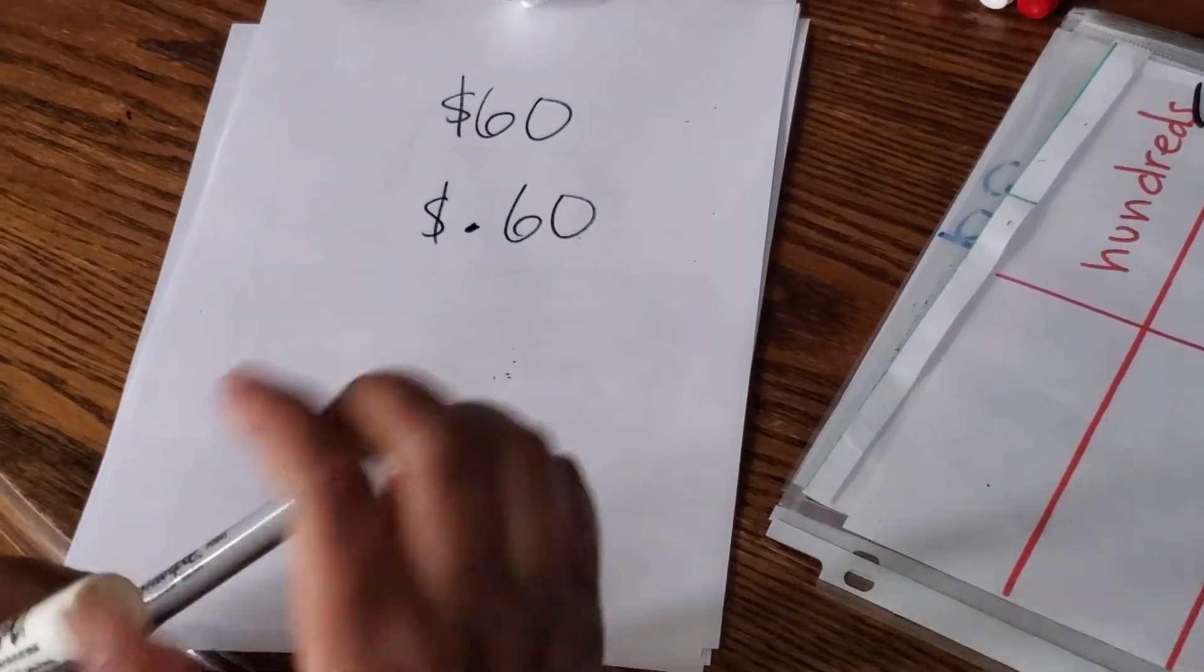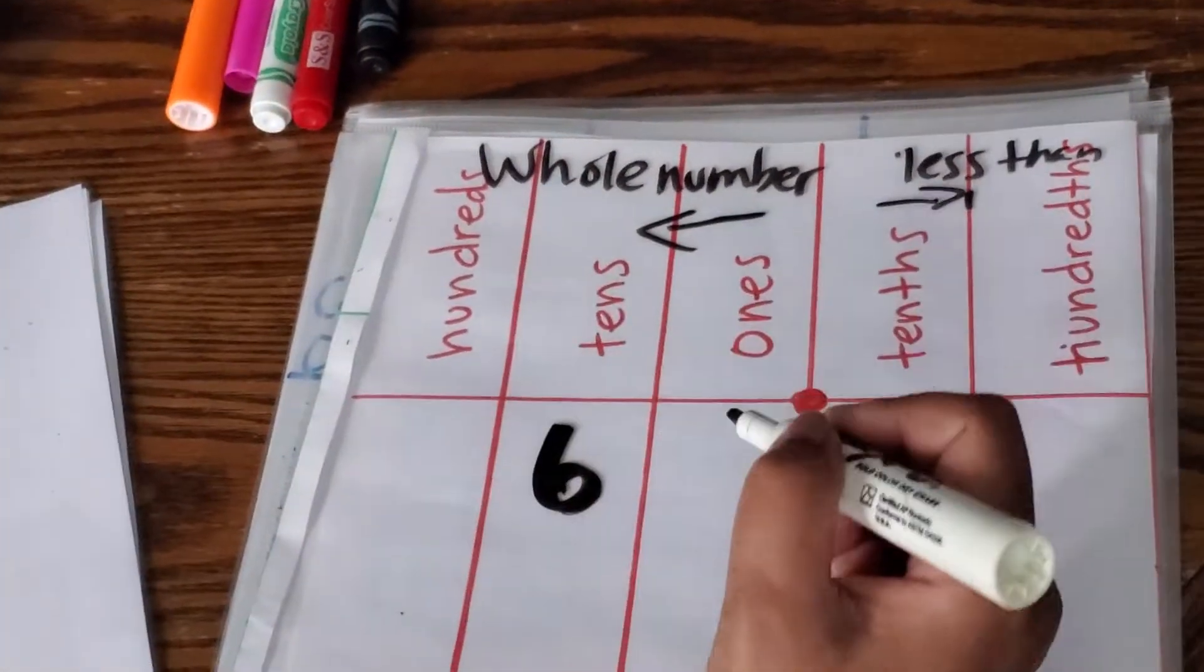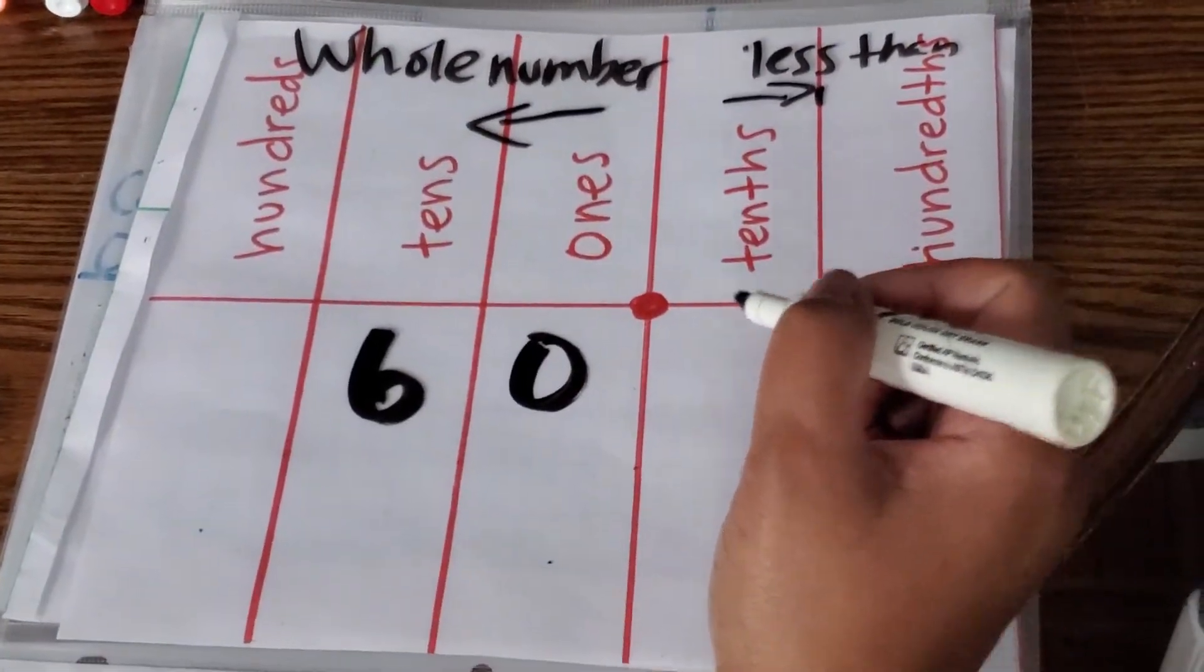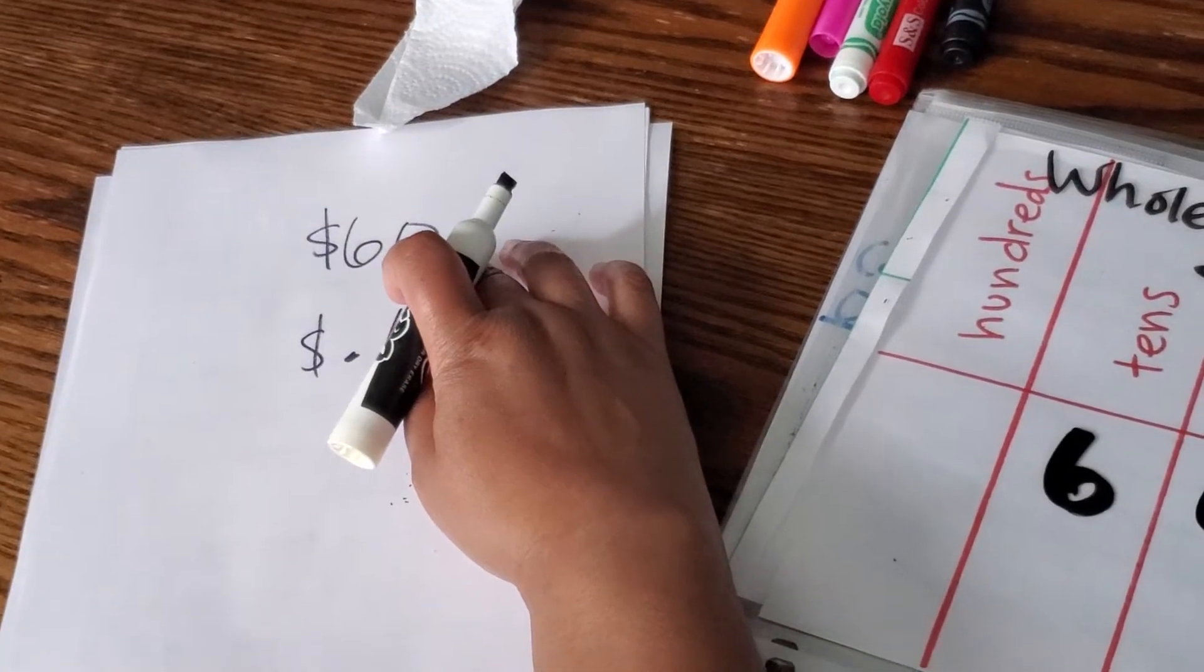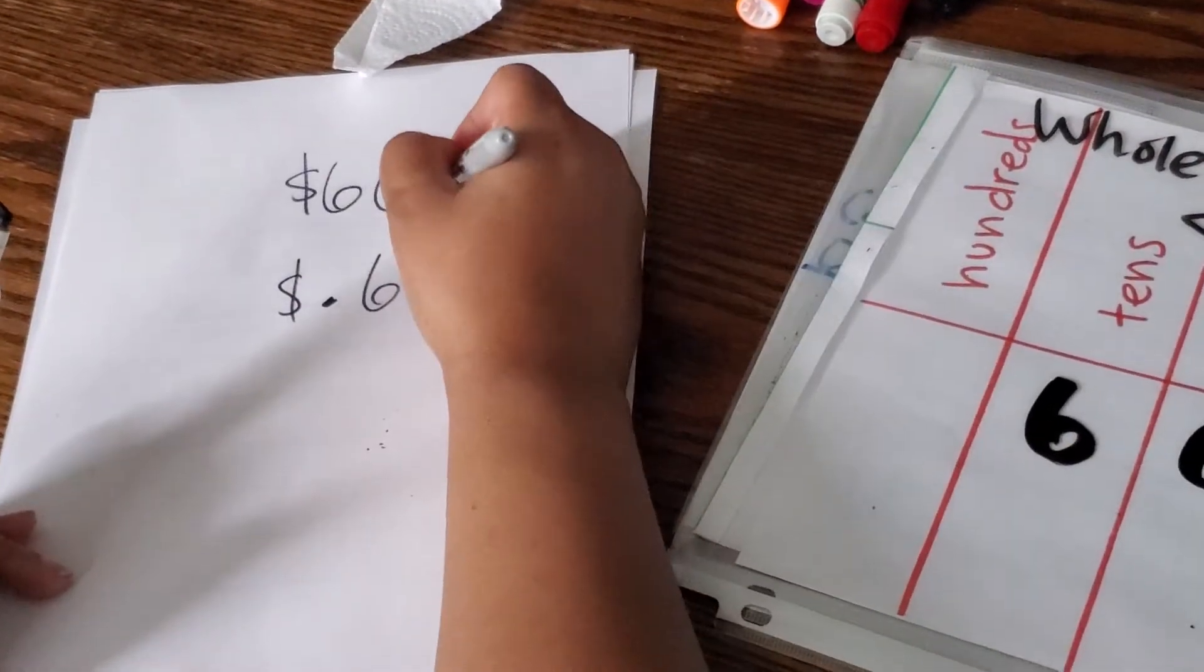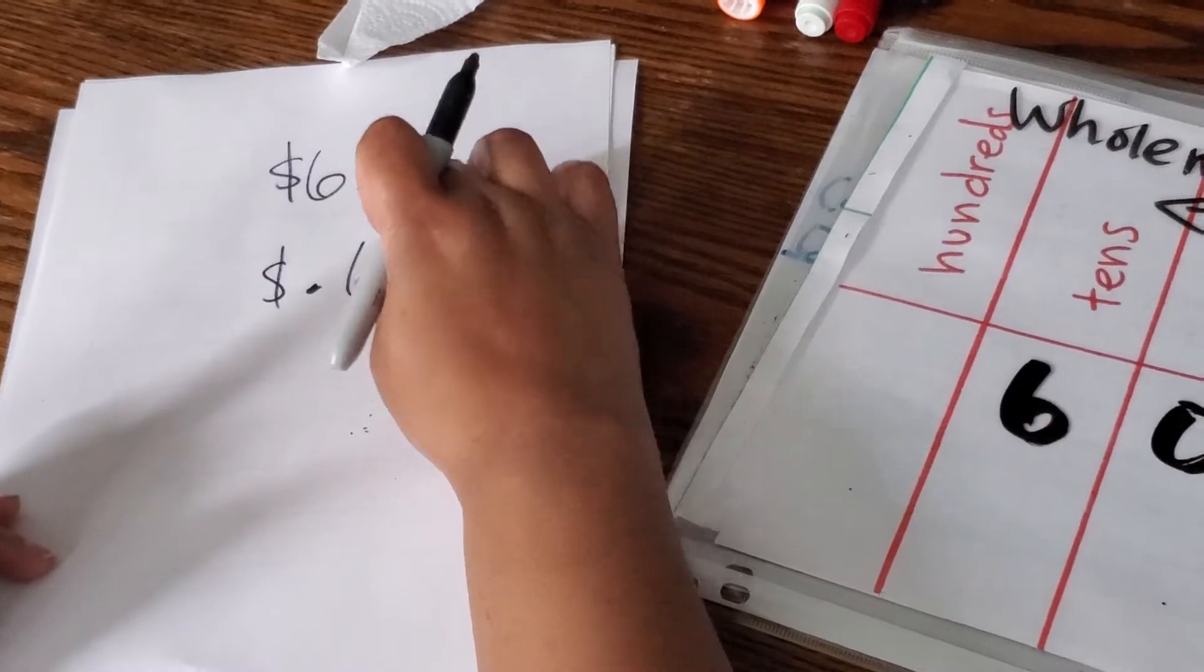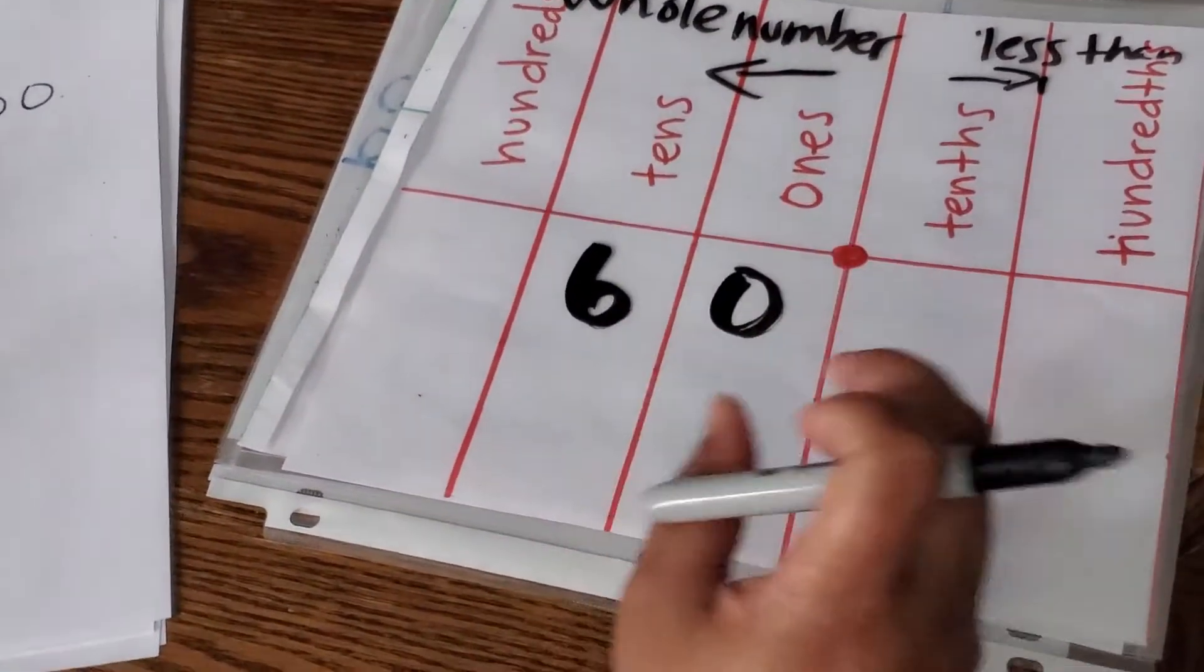If you use your place value chart and you make 60, you put six in the tens place, zero in the ones place. And then you'll notice I did not put a decimal point after this number. But it doesn't matter. I can write a decimal point if I want. But if you don't see one, you have to assume that there is one. Sixty, those are whole numbers. There's no decimal there.